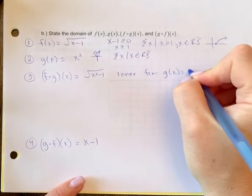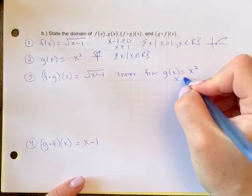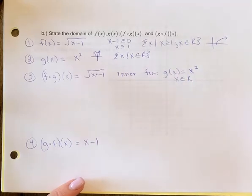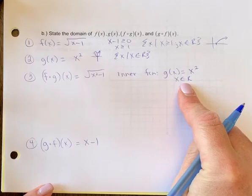So the inner function is g of x equals x squared, which means there is no restriction. So that would just mean x is the element of real numbers. This isn't my final answer, so I'm just writing that there's no restrictions there.